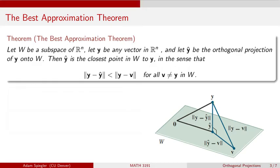Let's state this a little more formally. If W is a subspace of R^n and y is some vector in R^n, then y-hat is the orthogonal projection of y into the subspace W. What we are claiming is that y-hat is the closest point in the subspace W to the vector y. The component which is orthogonal to the subspace W is going to be the error in our prediction — y-hat is the predicted value, y is the exact value, and the vector z is our error.